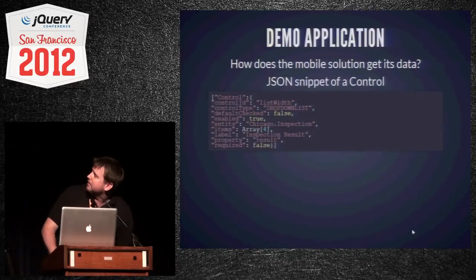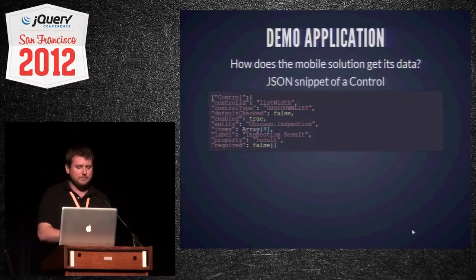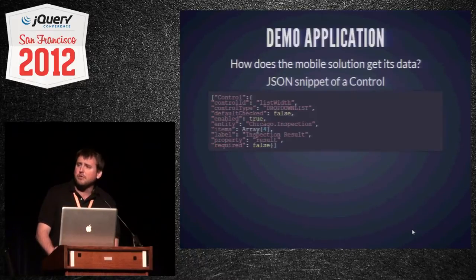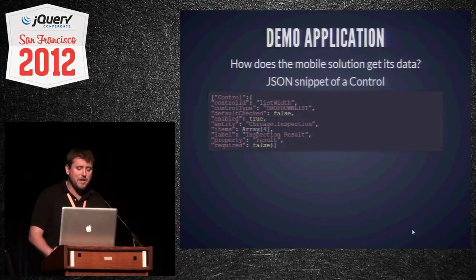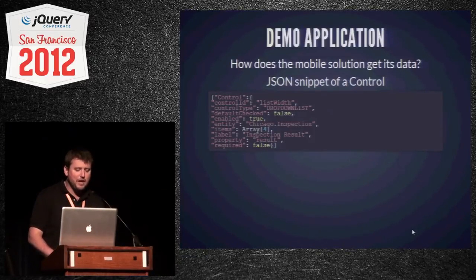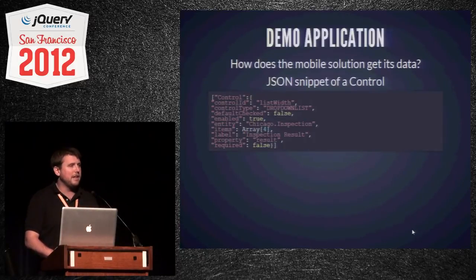Looking at a snippet of JSON from the form template, the key properties are: control ID (the ID used to render the control), control type (in this case a dropdown list), default checked (only relevant for checkboxes), enabled (whether the control is read-only), entity (what we bind values back to), items (the list of options for the dropdown), label (the text to render), property (the entity property to assign the control value to), and finally whether it's required or not.